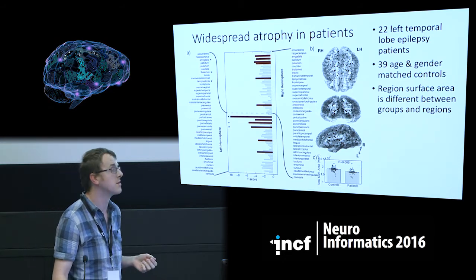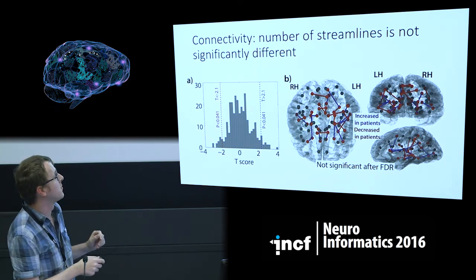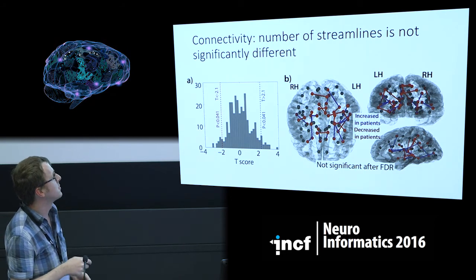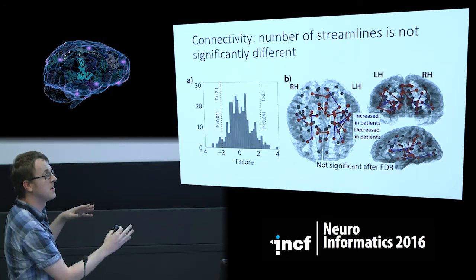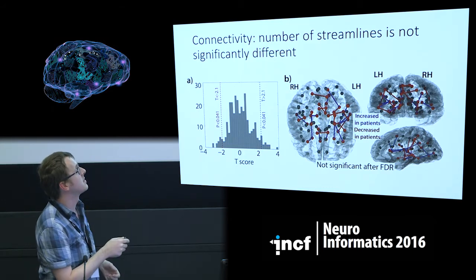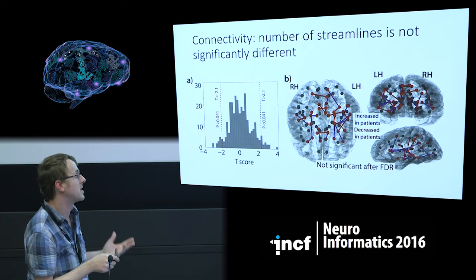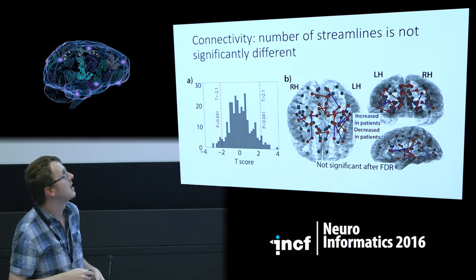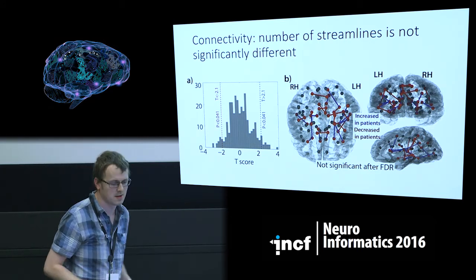Looking at connectivity values using the number of streamlines — as done in many studies — we plot the T-statistic for each edge in the network. It follows a pretty normal distribution with no huge outliers on either side. Plotting the top 10% of these, there is no obvious spatial profile to the left hemisphere as we might expect, and these are not significant after correction for false discovery rates. So using this measure, connectivity is actually not really different between patients and controls.